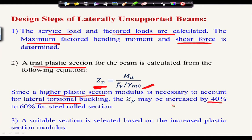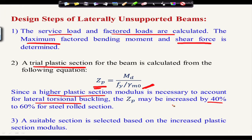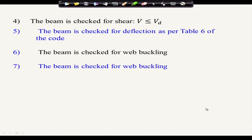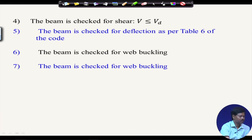We can approximately increase the section size — meaning the plastic section modulus — by 40 to 60 percent. We do not know exactly what percentage increment is required, so we try with 40 or 50 percent; it is essentially a trial and error process. After finding an appropriate section modulus, we choose a suitable section — it may be an I-section or channel section — and check whether that section can carry the moment due to lateral torsional buckling.